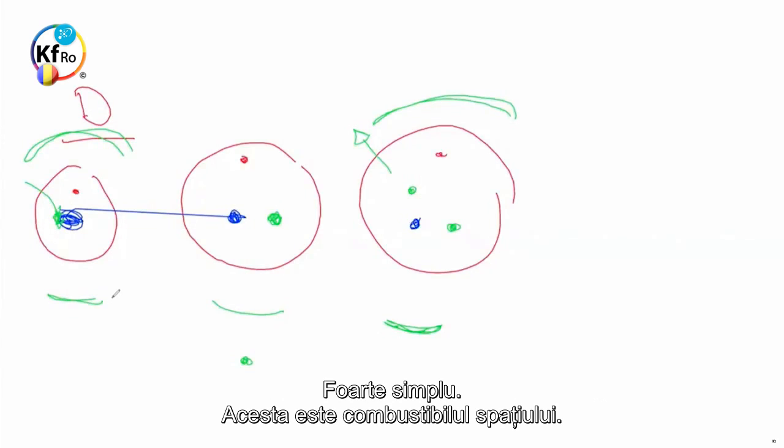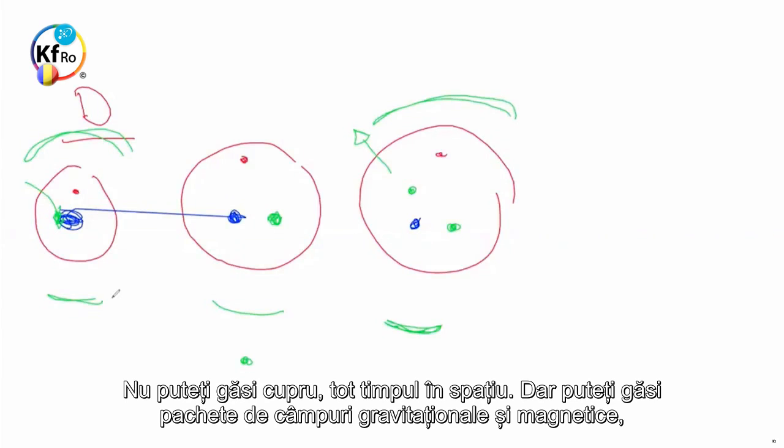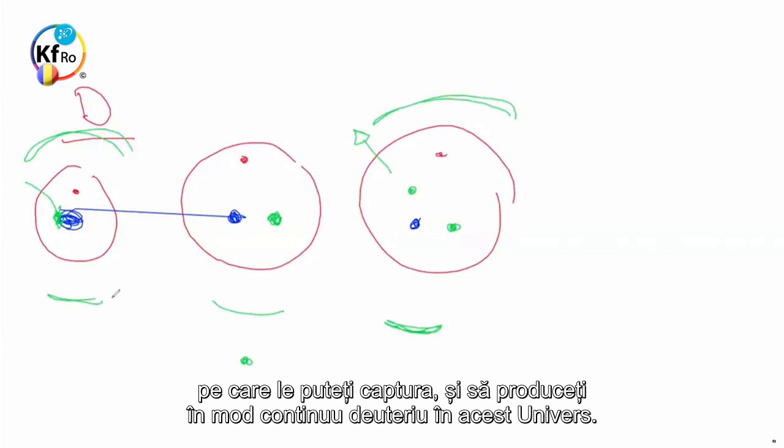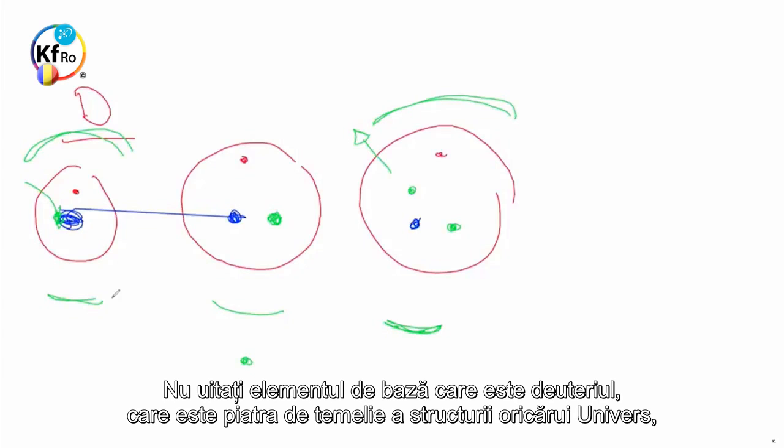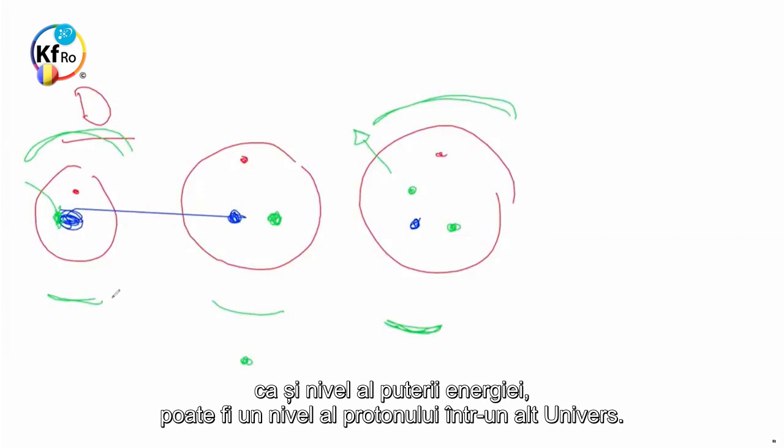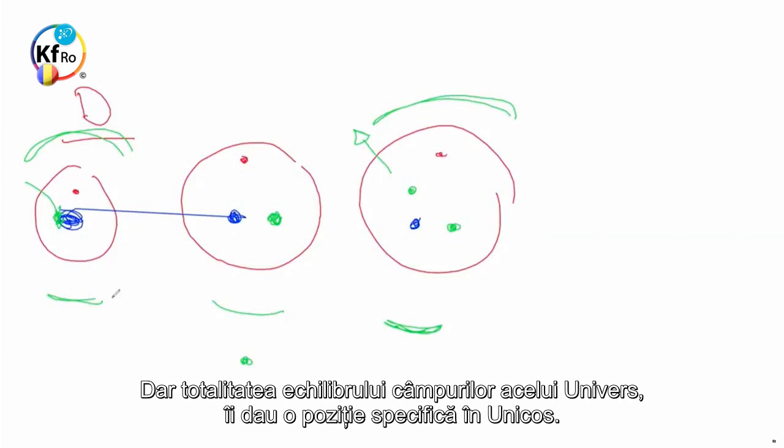Very simple. This is the fuel of the Space. You can't find Copper all the time in the Space, but you can find Gravitational Magnetic Field packages which imitate or have energy equal to the Proton, Electron or Neutron, that you can confine them and continuously produce Deuterium in this Universe. Don't forget, the basic element which is the Deuterium, which is the backbone of the any Universe structure, is different in the strength in different Universes. So what is an Electron to us at the energy level strength could be a Proton level in another Universe. But the totality of the balance of the Fields of that Universe has given a specific position in the Unicos.